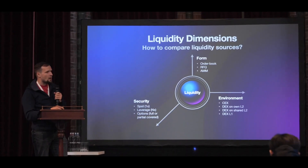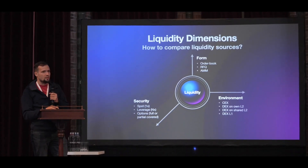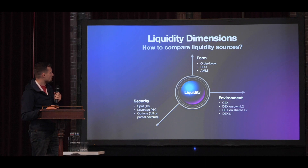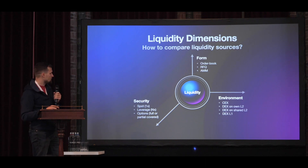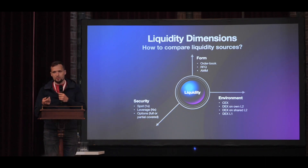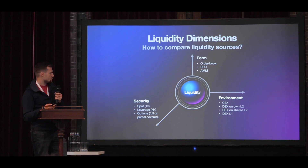I would define how we will make this comparison. We have a few different axes: the form of liquidity — whether it's order book based, AMM, or RFQ based — and the environment where this liquidity is placed, whether it's a centralized exchange, a DEX, a DEX on layer two, or a DEX on a separate layer two, which was pretty popular a few years ago.